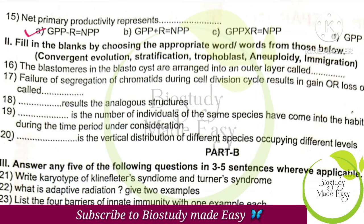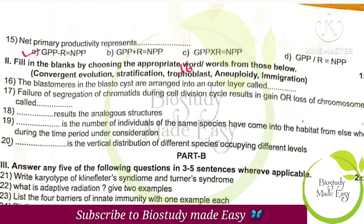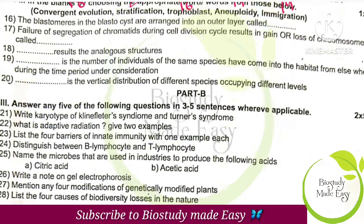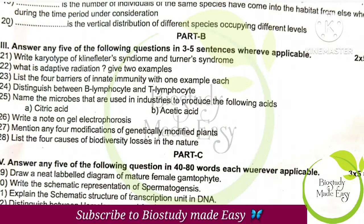For fill in the blanks: trophoblast; failure of segregation; analogous structures; convergent evolution; immigration; and occupying different levels is called stratification.